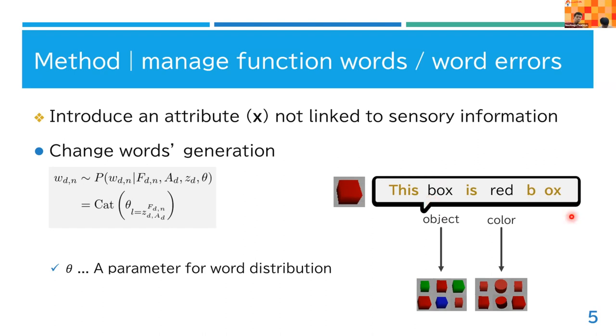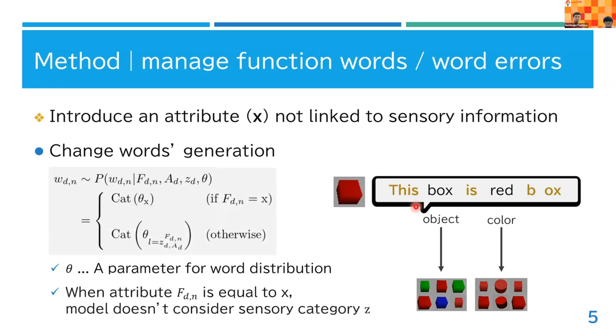Those substrings do not link to sensory information, so the model reduces effects on those words. For example, 'box' is the word for object and 'box' or 'red' must link to sensory information, but 'this' or 'is' should not link to sensory information.